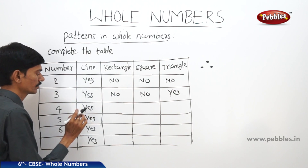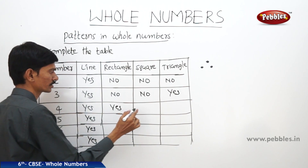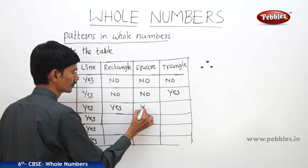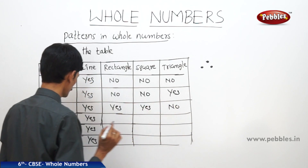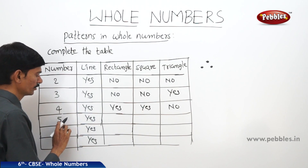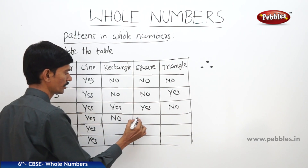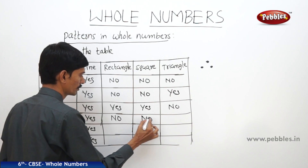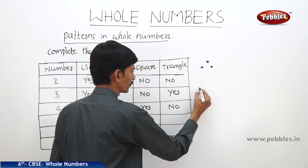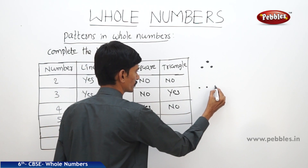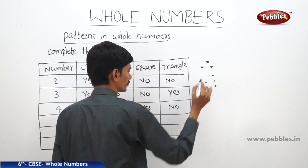4 can be shown as the rectangle, and 4 can be shown as the square. 4 cannot be shown as the triangle. Next, 5 cannot be shown as the rectangle, and 5 cannot be shown as the square. Now whether 5 can be shown as the triangle — we take 1, 2, 3, then 4, 5, but we need one more dot, so we cannot show 5 as a triangle.